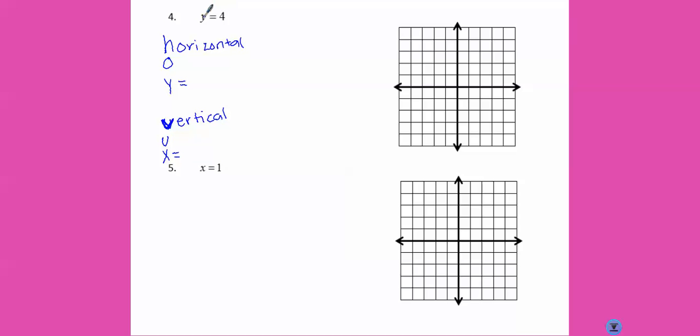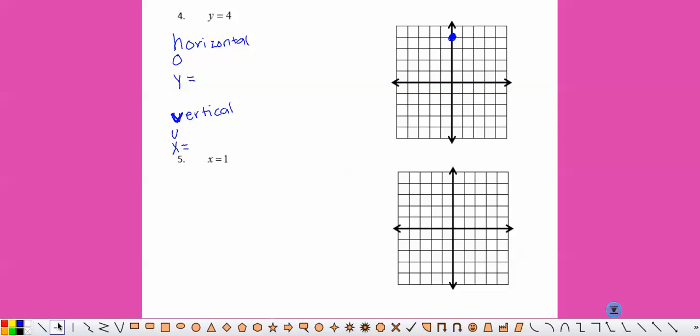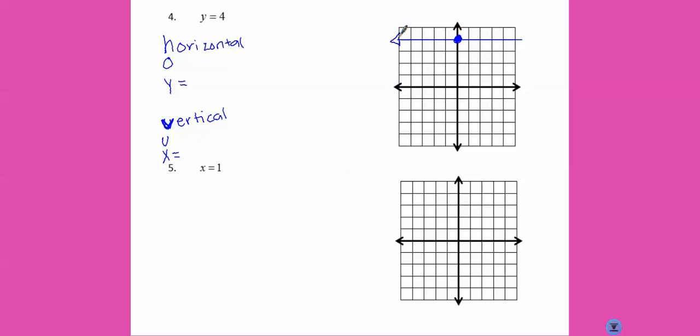So if y equals 4 we go to where y equals 4. 1, 2, 3, 4. And we're going to draw a horizontal line. Arrows on the end.